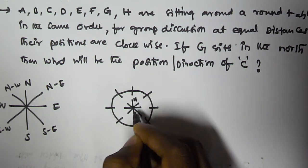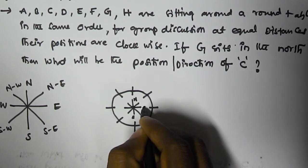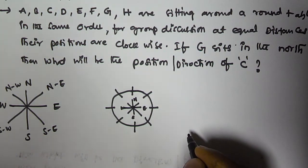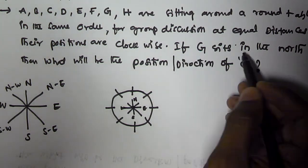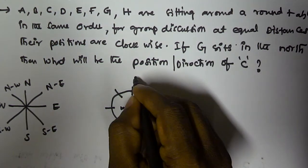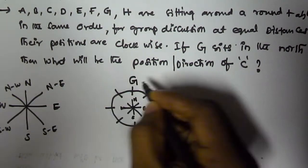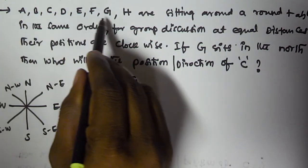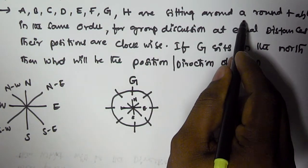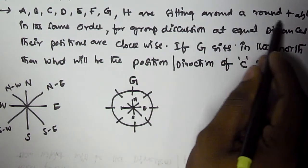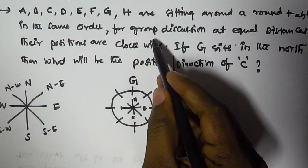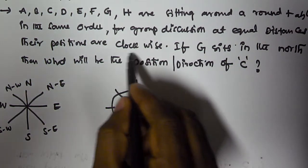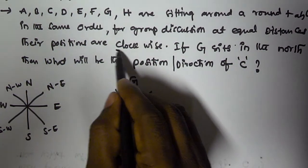This is the north, this is the south, this is the east, and this is the west. It is given G sits in the north, so G is here. It is told that A, B, C, D, E, F, G, H are sitting around the round table in the same order. So if G is there, they are sitting in the clockwise direction.